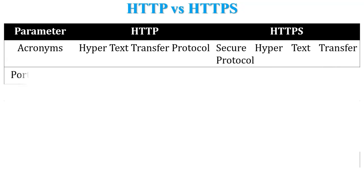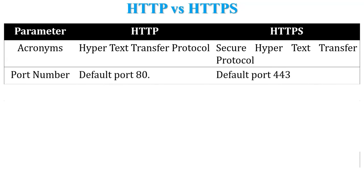The next parameter is port number. The default port number of HTTP is 80, and the default port number for HTTPS is 443.